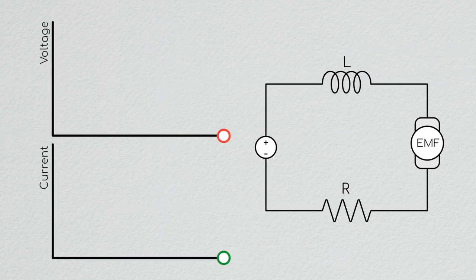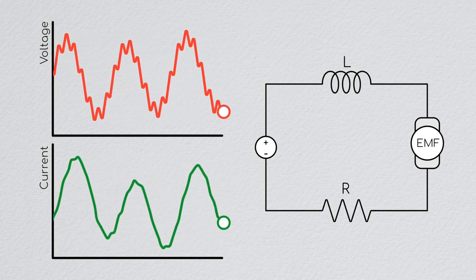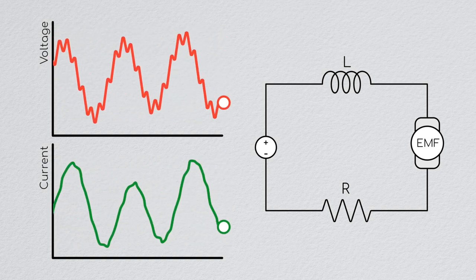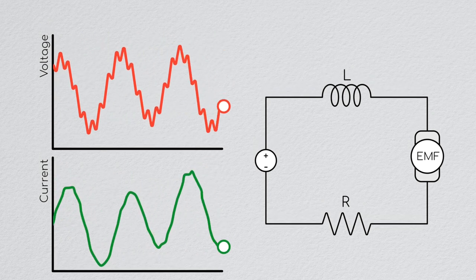Thus, the inductor-resistor circuit acts as a low-pass filter between the voltage we apply and the current that runs through the system. We can take advantage of this current filtering in the motor to control the current running in the system.